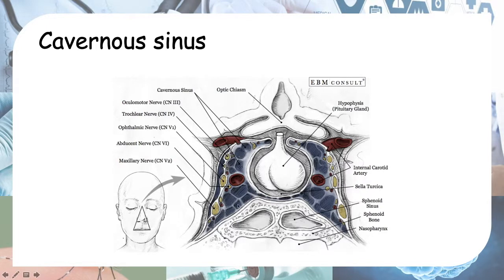Inside the cavernous sinus there is the internal carotid artery and also cranial nerves — specifically cranial nerves 3, 4, 5, and 6. For cranial nerve 5, there are three branches V1, V2, V3, but only V1 and V2 actually pass through the cavernous sinus. So remember: 3, 4, V1, V2, and 6.